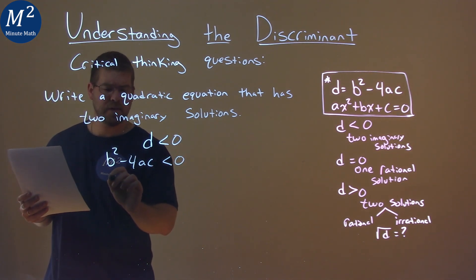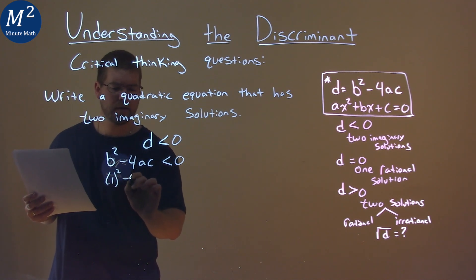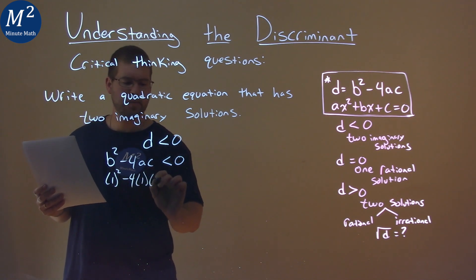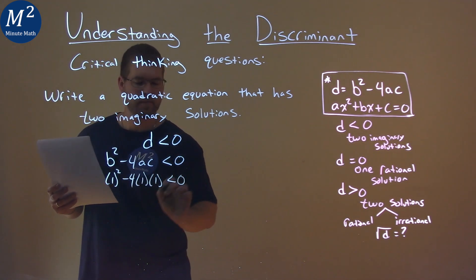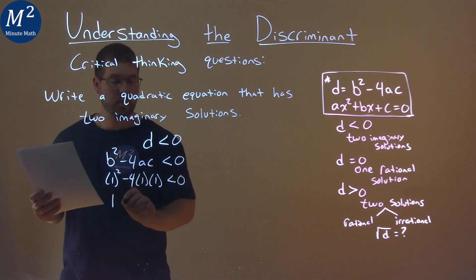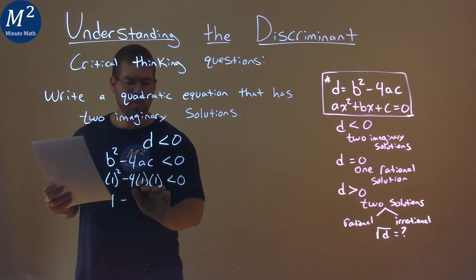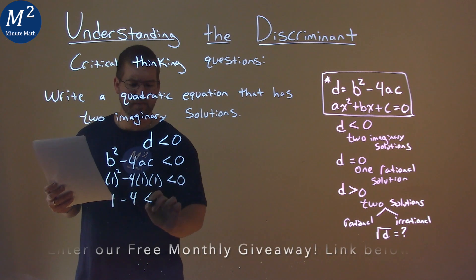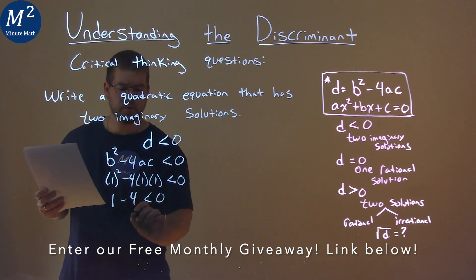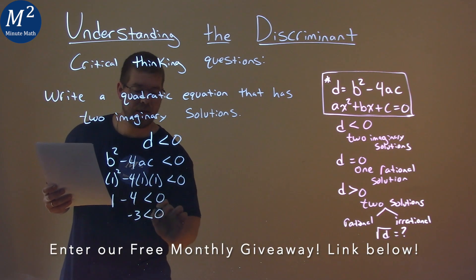Well, we'll start with ones. Ones are pretty easy. One squared minus 4 times a is 1, and times c is also 1. One squared is 1. Great. And 4 times 1 times 1 is 4. 1 minus 4 is a negative 3, and that's less than zero.